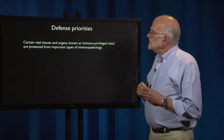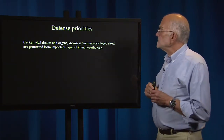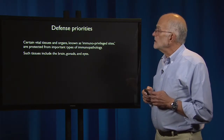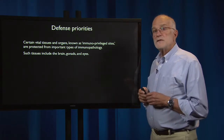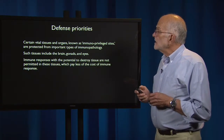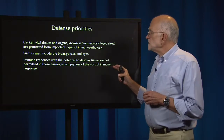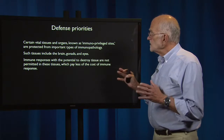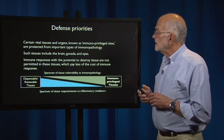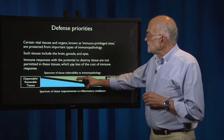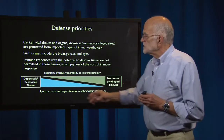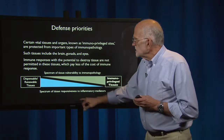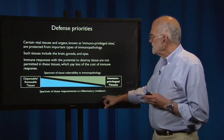Certain vital tissues and organs are known as immunoprivileged sites, which are protected from important kinds of immunopathology. They include the brain, the gonads, and the eyes. Immune responses that have the potential to destroy tissue are not permitted in these tissues, which pay less of the cost of immune response. There is a spectrum of tissue vulnerability to immunopathology — from dispensable, renewable tissues to immunoprivileged tissues — and a spectrum of tissue responsiveness to inflammatory mediators.